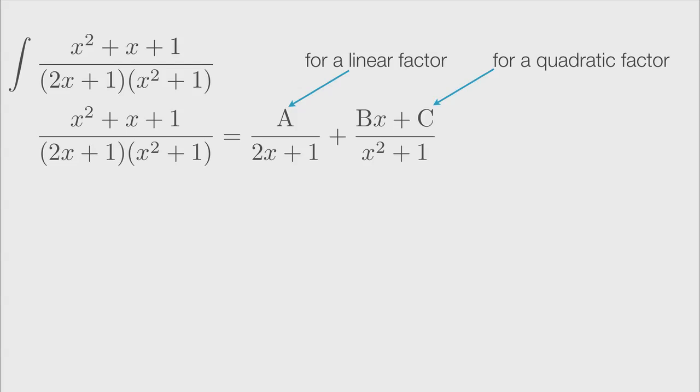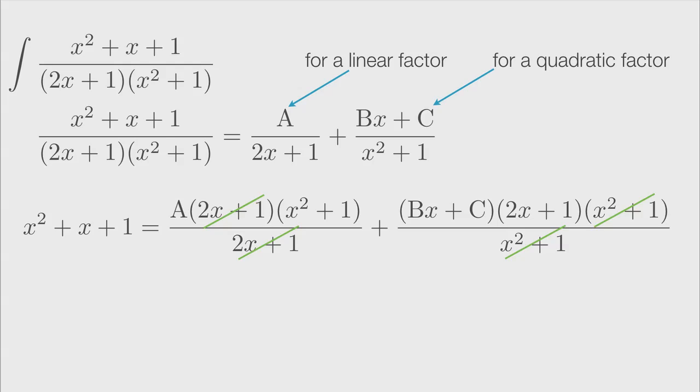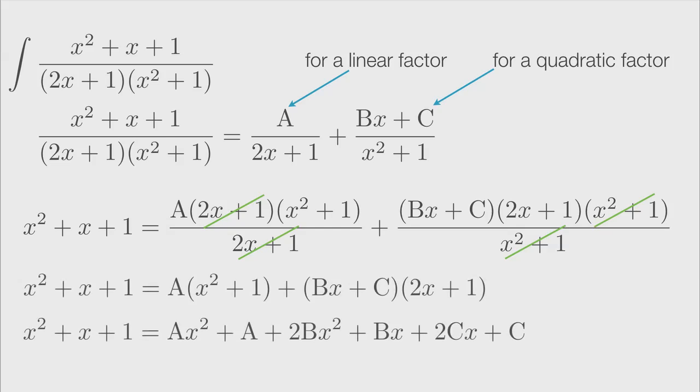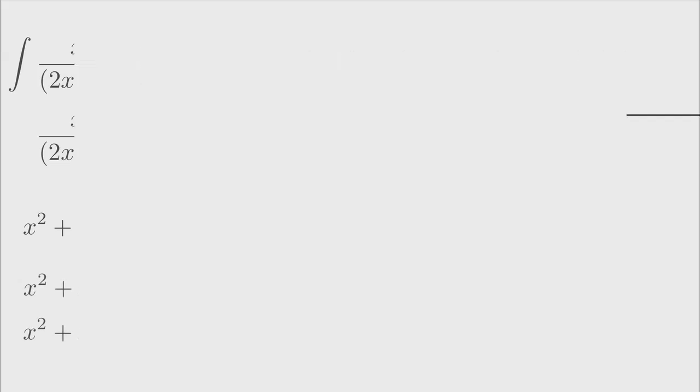Once you've set up your decomposition, you'll need to multiply both sides of your equation by the denominator from the left-hand side. Then, cancel terms to simplify as much as possible. From here, all that's left to do is expand your terms and use simultaneous equations to solve for each of your variables, a, b, c, etc.